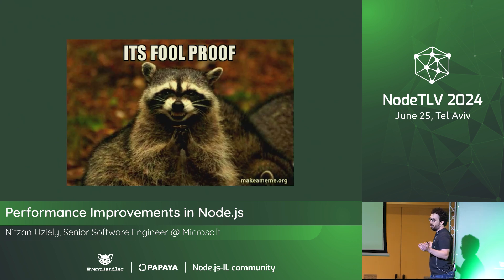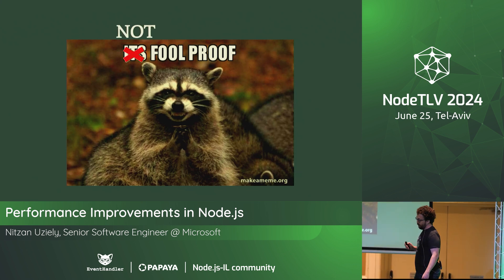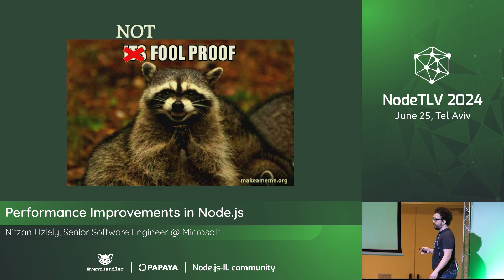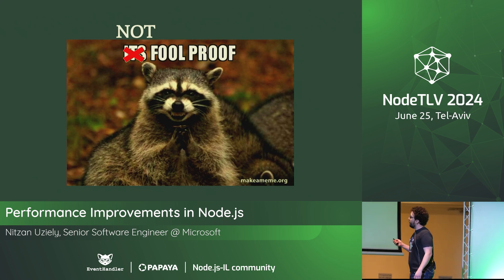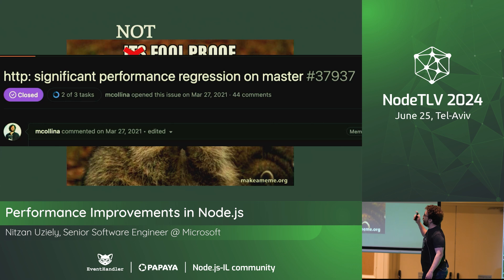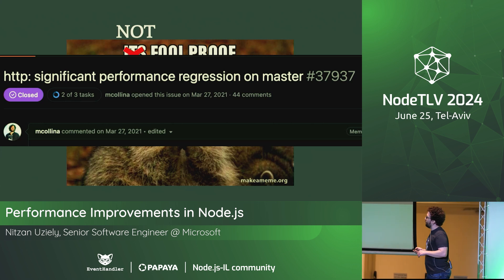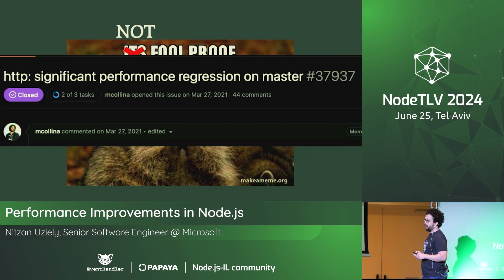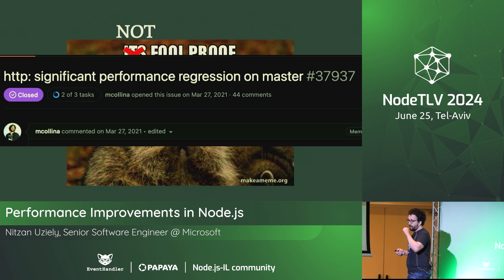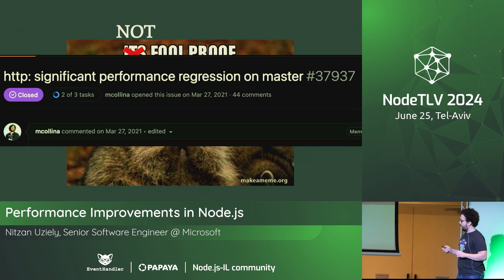This benchmark process isn't foolproof. Sometimes small changes creep in across multiple PRs, or you just don't have benchmarks on the right thing. For example, between Node 14 and 15 there was a significant regression on master — about 20-25% — that was fixed between Node 15 and 16. It wasn't caught because there were five or six PRs on the HTTP stack at the same time causing gradual degradation.